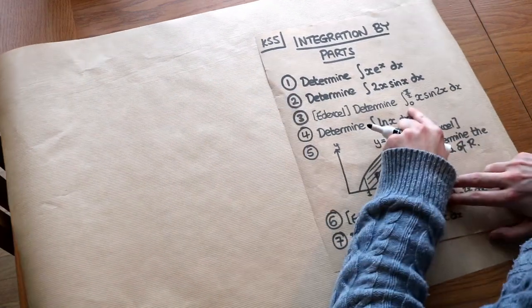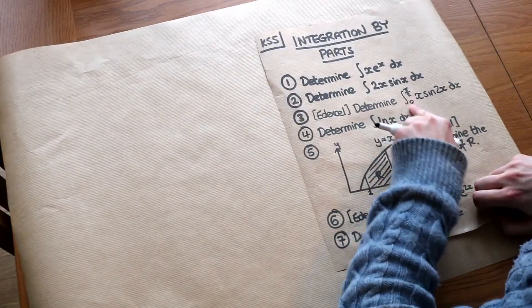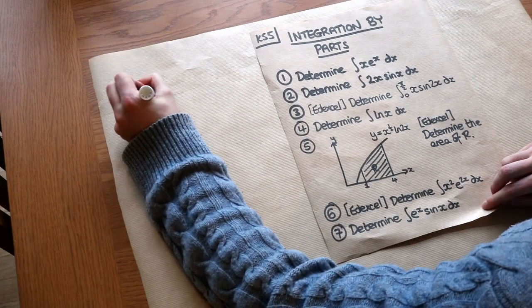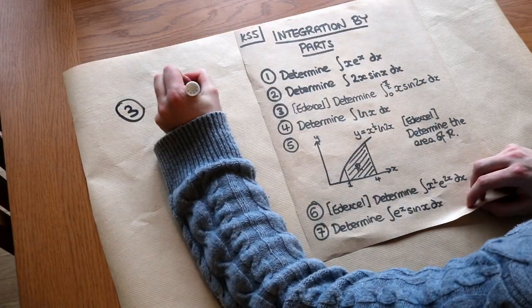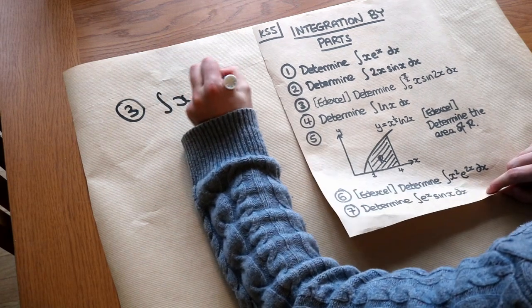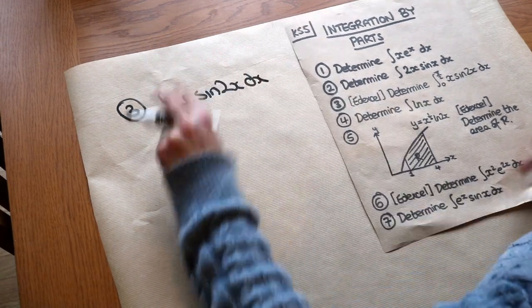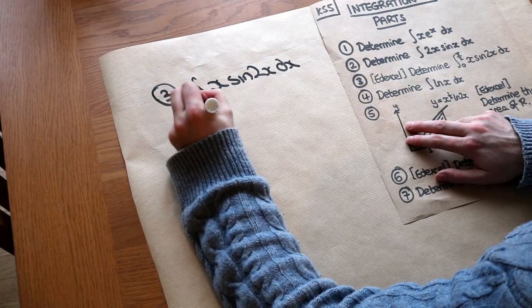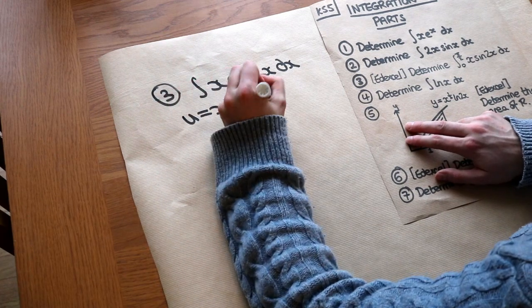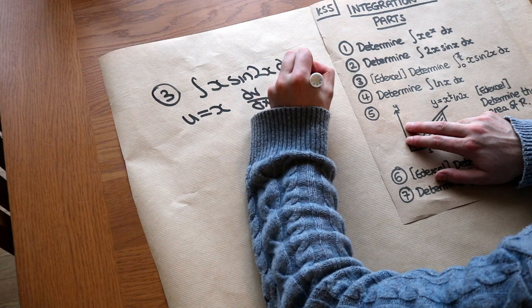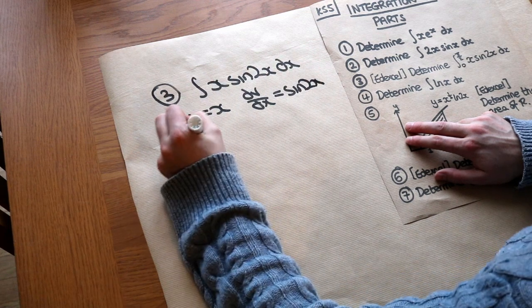In question 3, we've now got limits in the integral. Let's first ignore the limits and work out the integral without them, then worry about the limits at the end. As before, u is going to be x and dv/dx is going to be sin(2x).